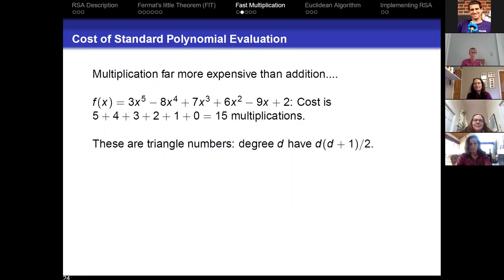Let's take a polynomial degree five: 3x to the fifth minus 8x to the fourth and so on. How many multiplications? To calculate x to the fifth: x times x is x squared, that's one multiplication. Times x is x cubed, there's two multiplications. Times x is x to the fourth, is three multiplications. Times x is x to the fifth, is four multiplications. Times three is five multiplications. So 3x to the fifth costs five multiplications, 8x to the fourth costs four multiplications, and so on. So I have 15 multiplications, and these are very famous numbers, these are the triangle numbers. If you add the numbers from 0 to d, it's just d, d plus 1 over 2.